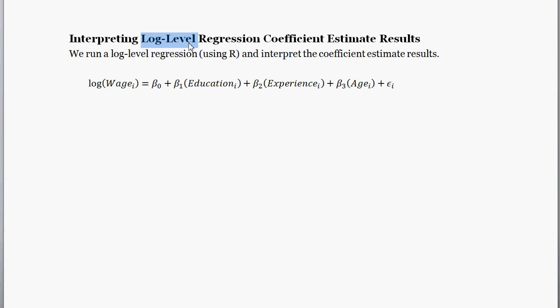Suppose that we have the following model that we wish to interpret the results of. Here we have log wage as our dependent variable, our response variable. It's a function of an intercept, plus beta one times education, plus beta two times experience, plus beta three times age, and then our error term.